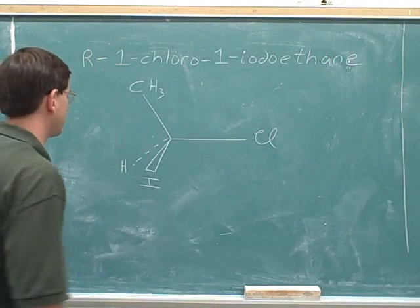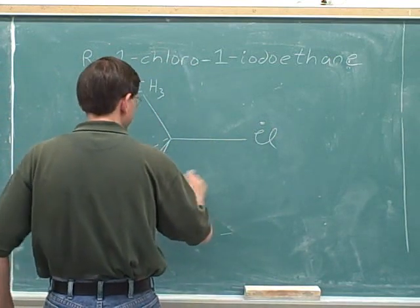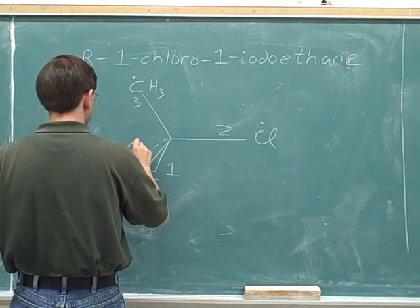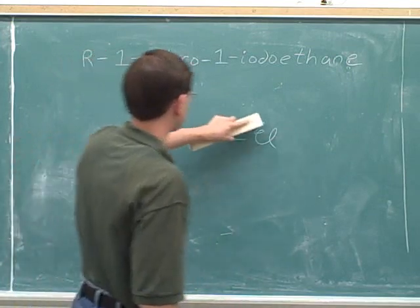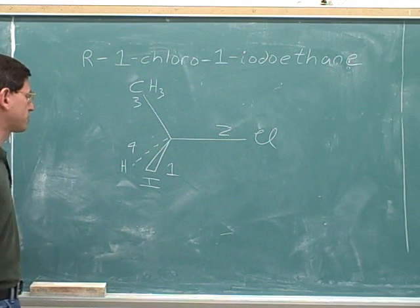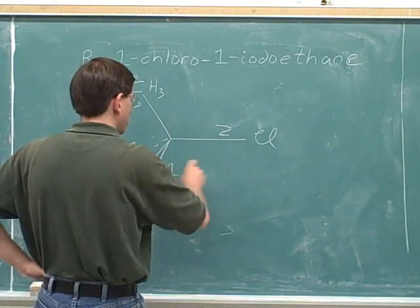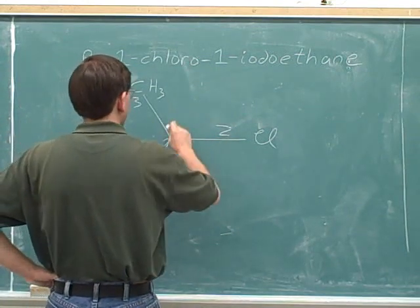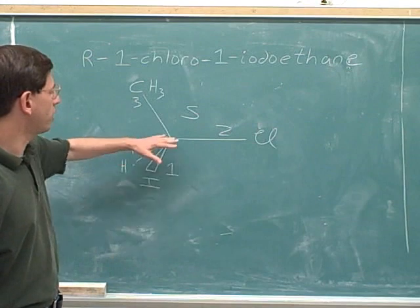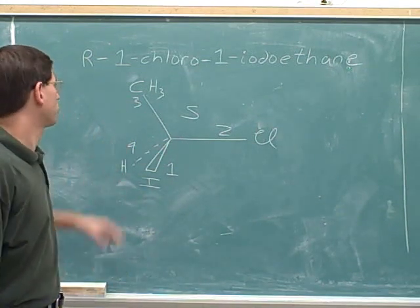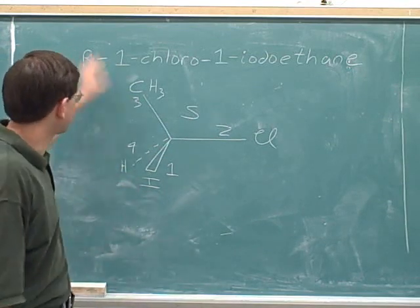Let's figure out what this configuration is. Iodine gets the number one priority, chlorine gets the number two, carbon gets the number three, and hydrogen gets the number four. We purposely put the number four pointing away from us, so there's a simple one-step method for determining the configuration. This comes out to a counterclockwise or S configuration. So the way we've drawn the molecule, it came out to be S. But that's not what we wanted — we were planning to get an R.